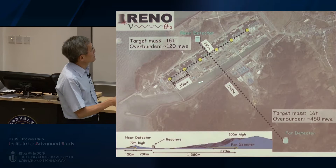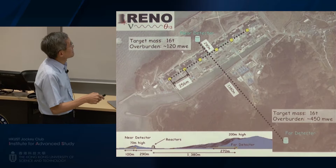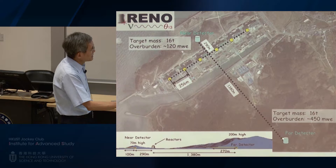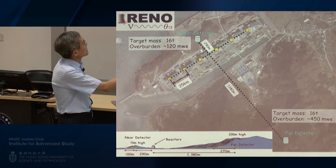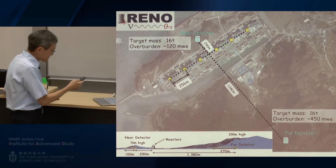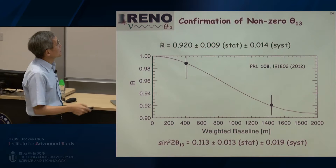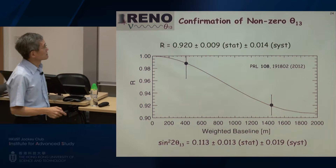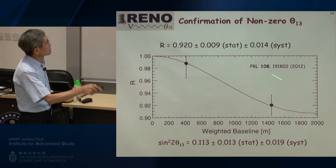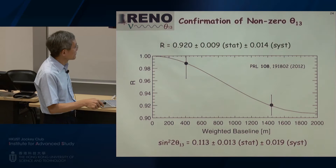Shortly after the Daya Bay experiment, the RENO experiment also announced results. Let me show you the layout of the RENO experiment: similar to Daya Bay, there are six nuclear reactors lined up in a straight line. Along the bisector, about 1.4 kilometers away, they have the far detector underground, and about 300 meters behind the reactors is the near detector. Using the near and far detectors they can do a relative measurement. About a month after Daya Bay announced the result, RENO also announced its first result, confirming that some of their antineutrinos also disappear. The result is very similar to Daya Bay, though the values of theta-13 from RENO at that time were somewhat higher.